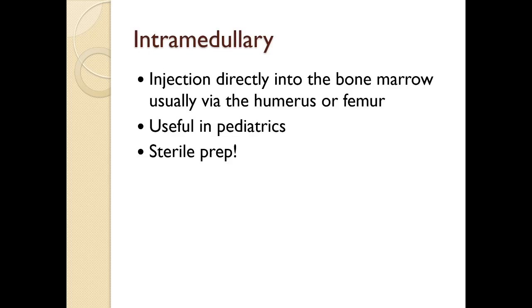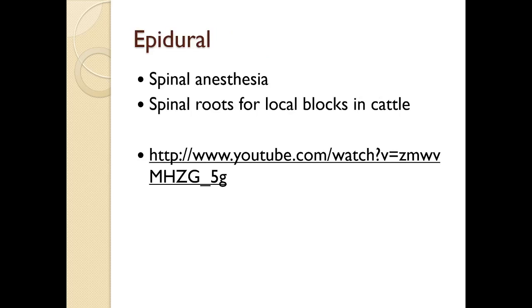Intramedullary is an injection directly into the bone marrow, usually through the humerus or femur — the large bones. It's also called intraosseous and is useful in pediatrics, but you do need sterile prep for that as well.